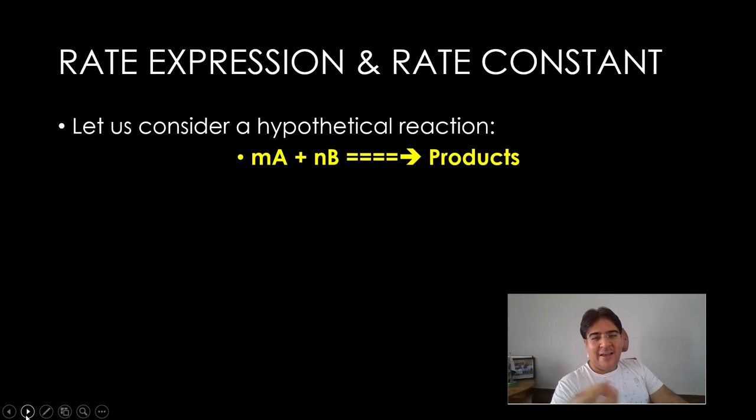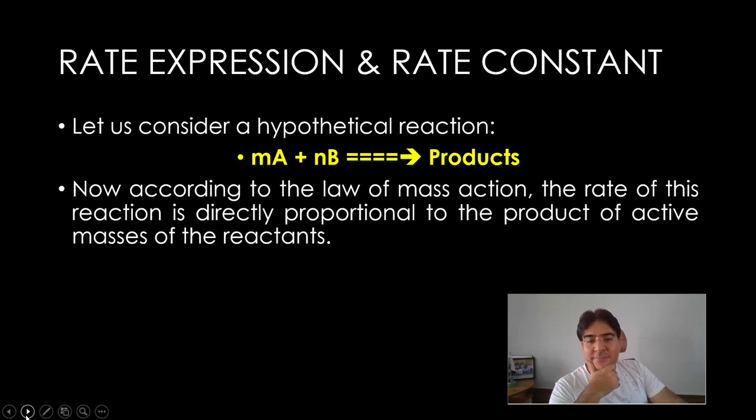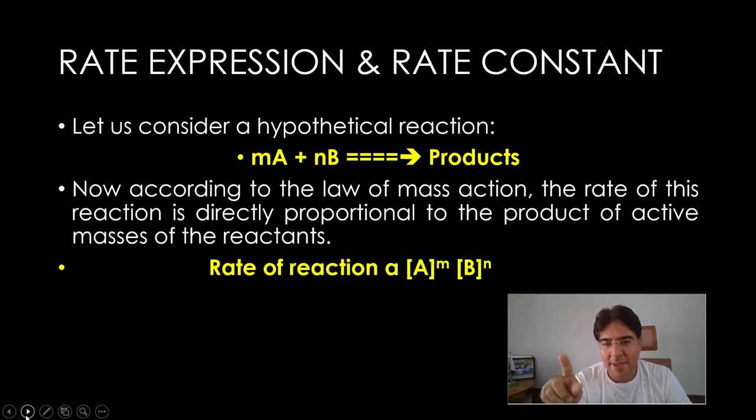Consider a hypothetical reaction: m moles of A plus n moles of B gives you products. Single arrow, it's an irreversible reaction. So what is the reaction? There's only forward reaction, no backward reaction. If you know the law of mass action, we all know, the rate of reaction is directly proportional to the product of active masses of the reactants. So how do you write it? Rate of reaction proportional to A to the power m, B to the power n. You know it from the 6th chapter.